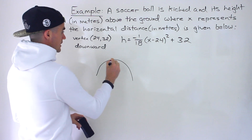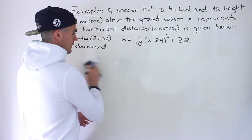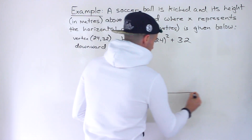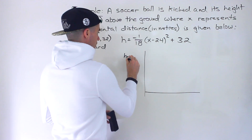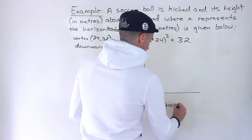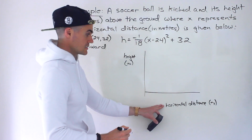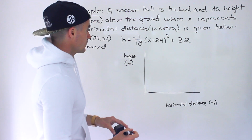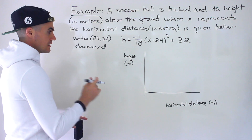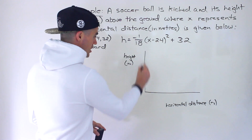The ball is reaching a maximum height of 32 meters. Let's do part C first and sketch the graph — it's probably best to sketch it and then talk about the different characteristics. We have the horizontal distance as the x value and the height on the other axis. We know it's going to reach a maximum height of 32 meters at a horizontal distance of 24. To sketch in more detail, let's find the height it starts at by plugging in zero for x.